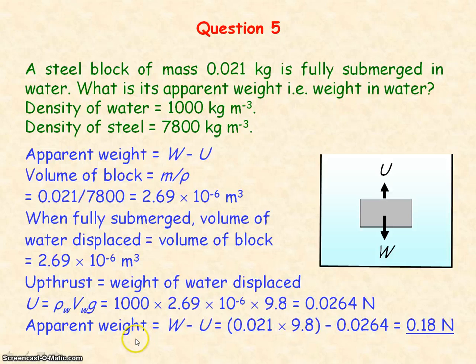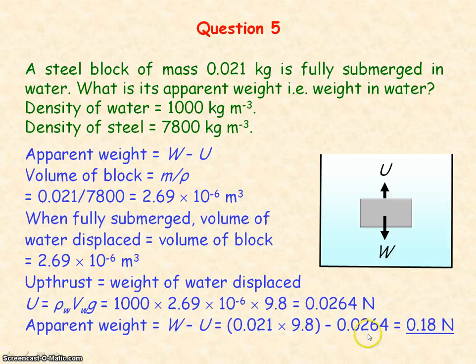So the apparent weight of the block is equal to its weight, mg, minus the upthrust, and is equal to 0.18 newtons.